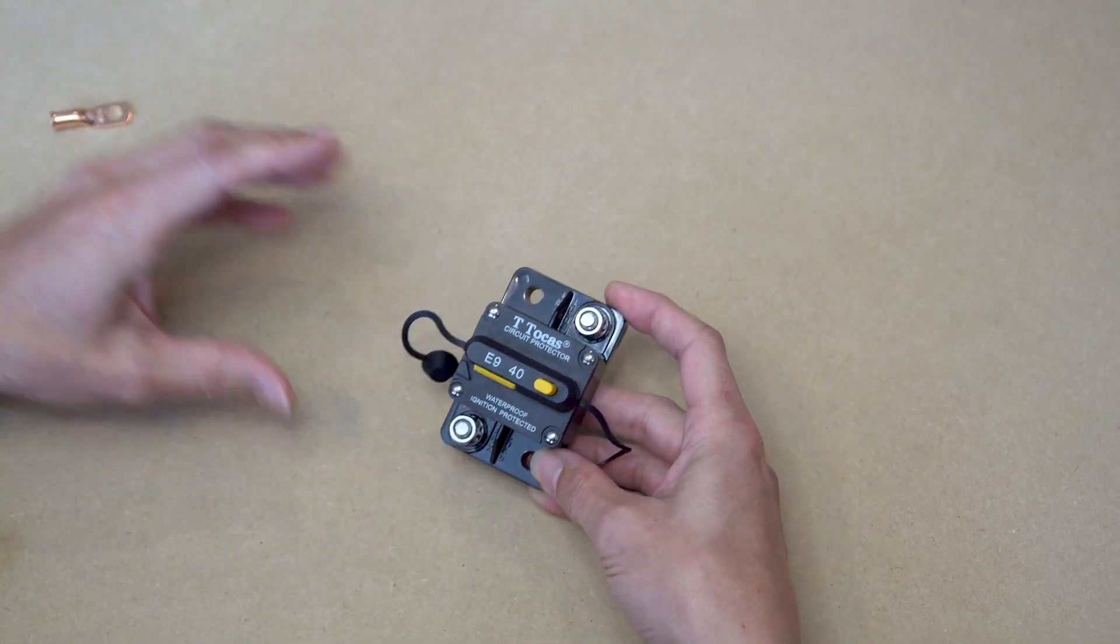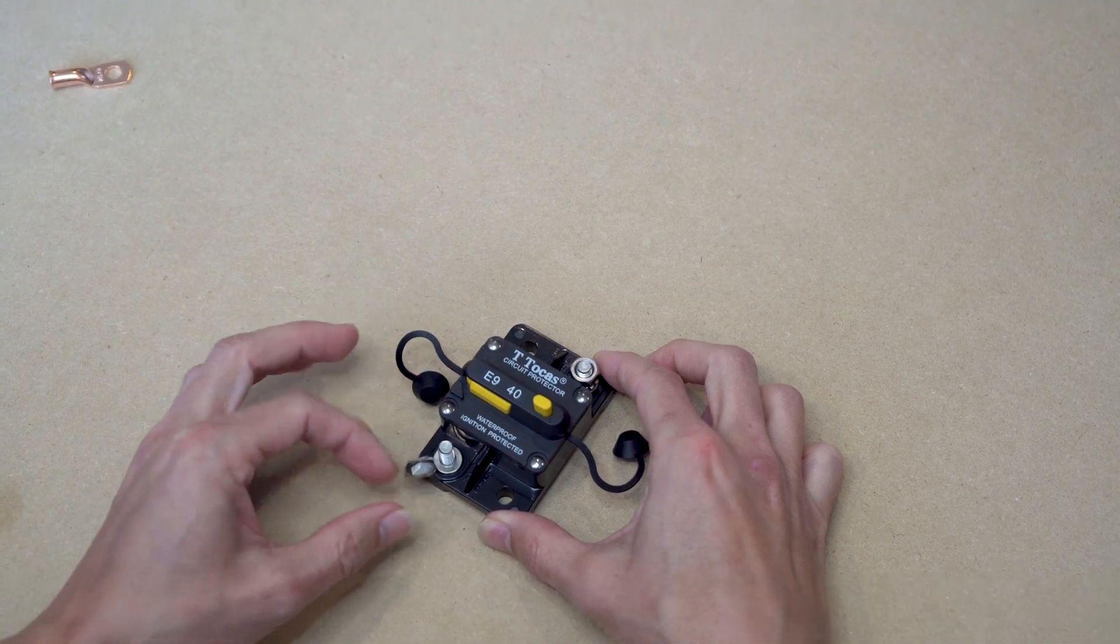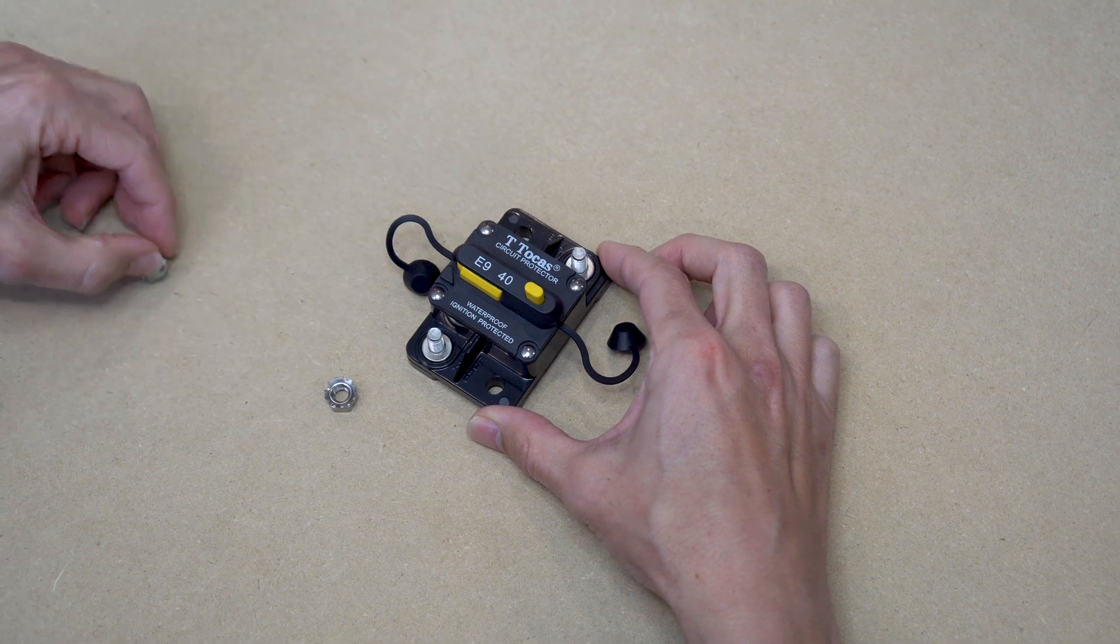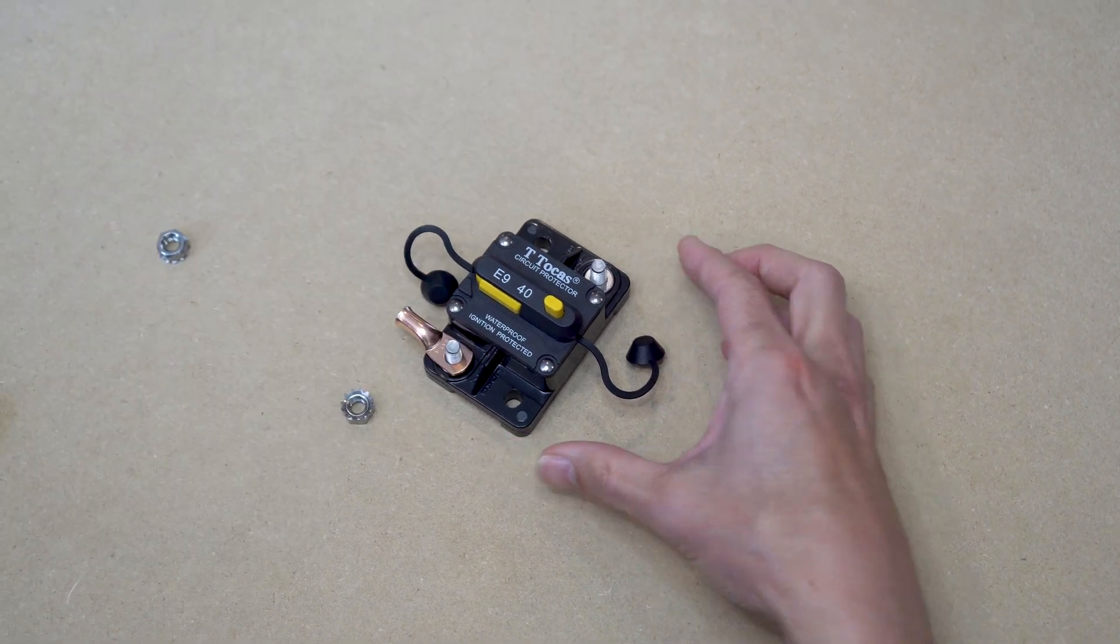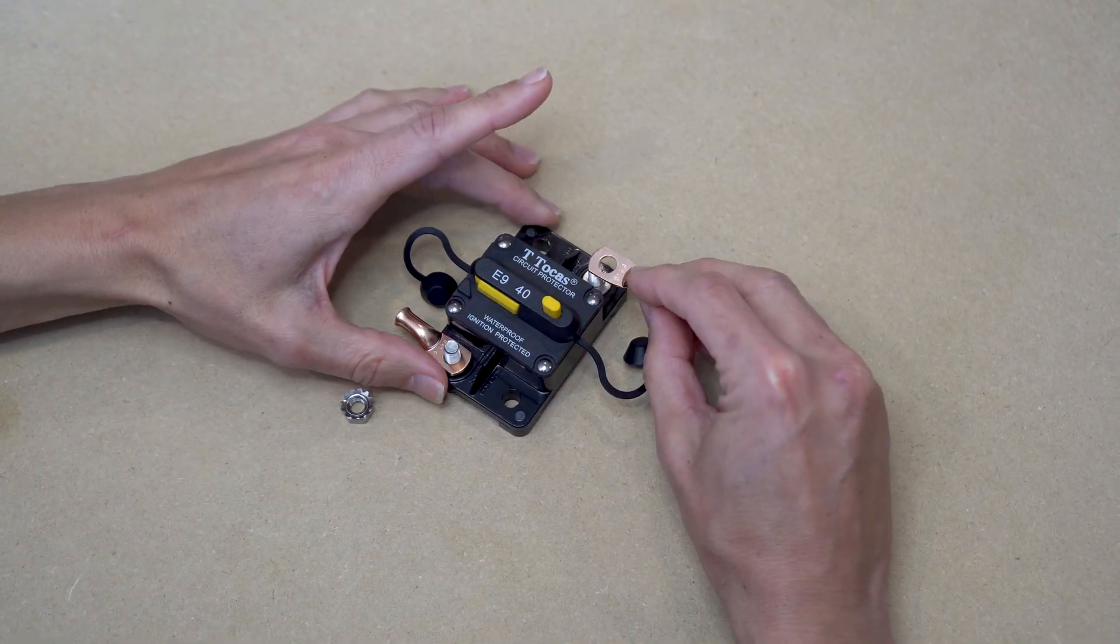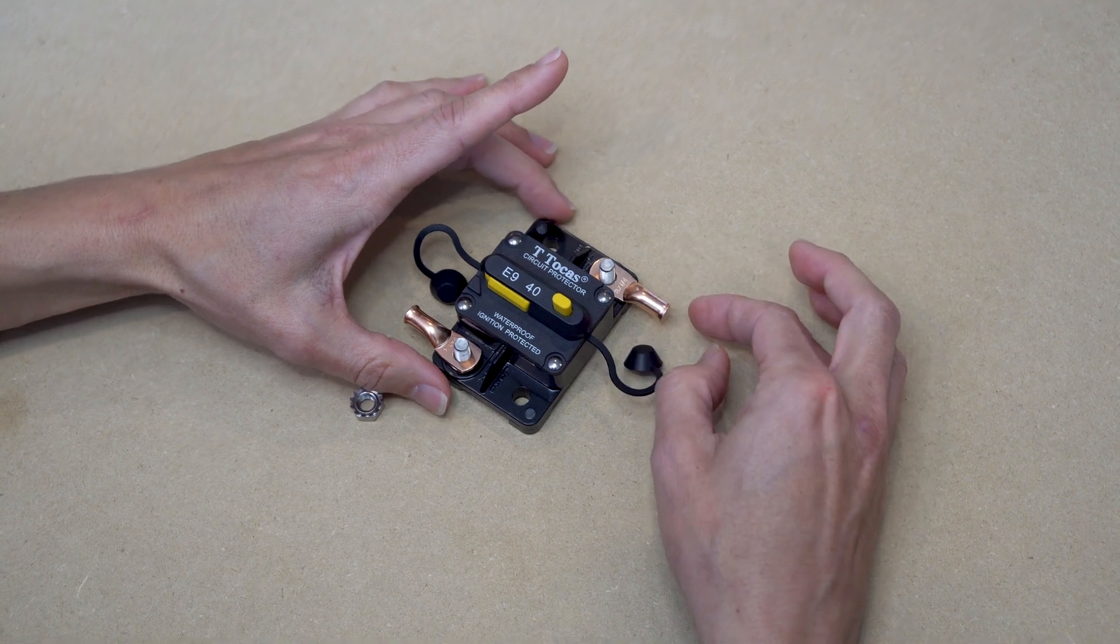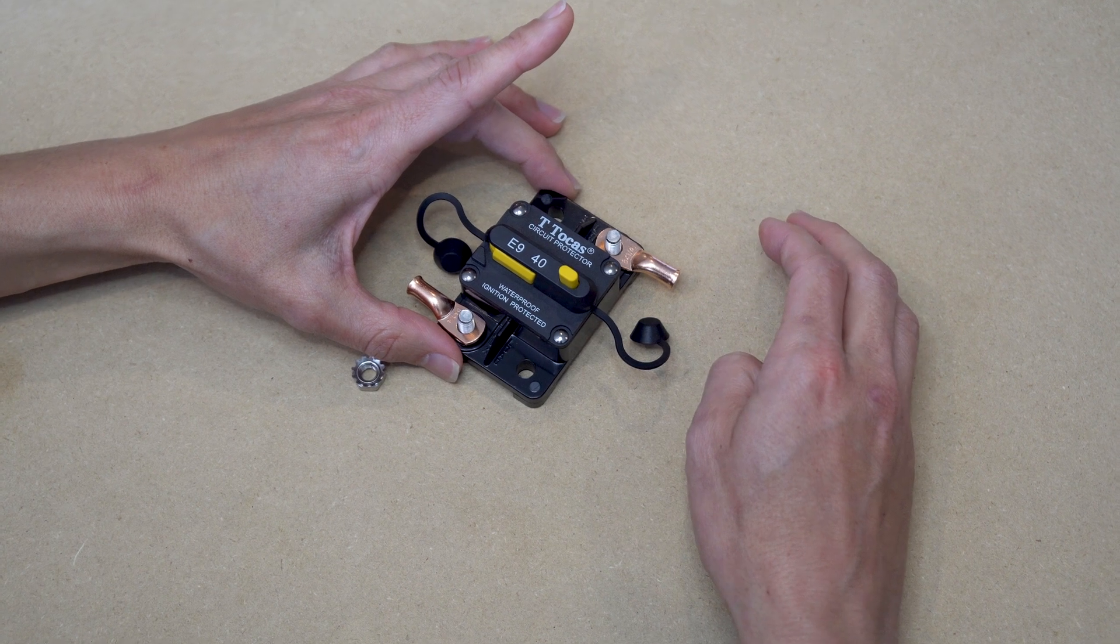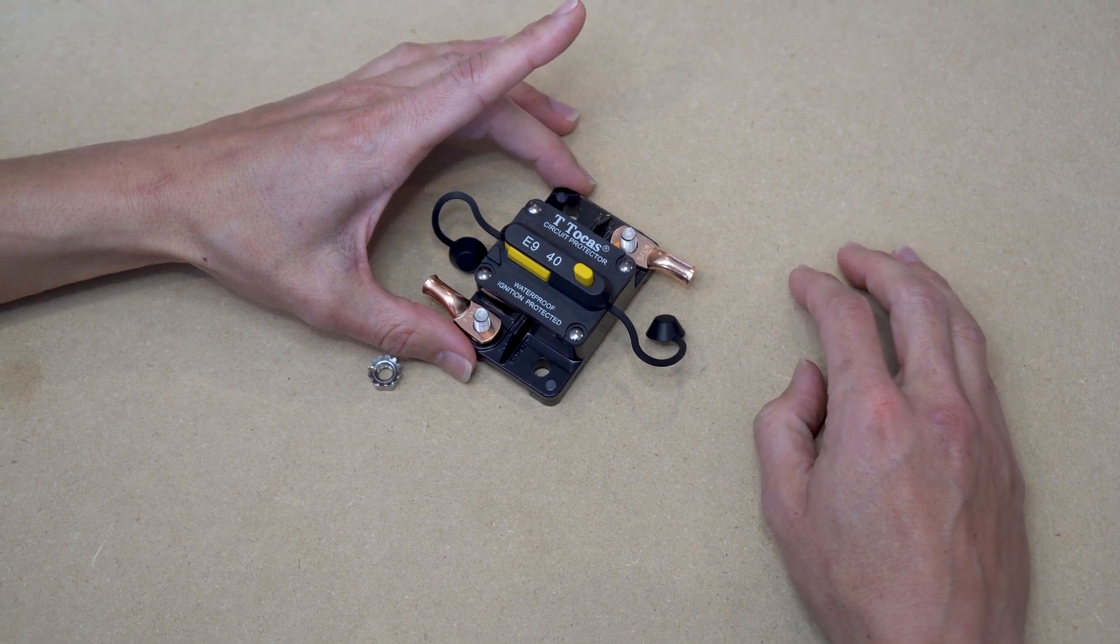Then to make the connection, unscrew the two nuts from the terminal posts and place the lugs over the terminal posts. You can orient these lugs either vertically, diagonally, or horizontally. It doesn't really matter and depends on the layout of your electrical system.